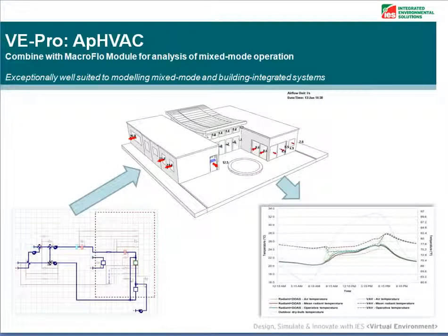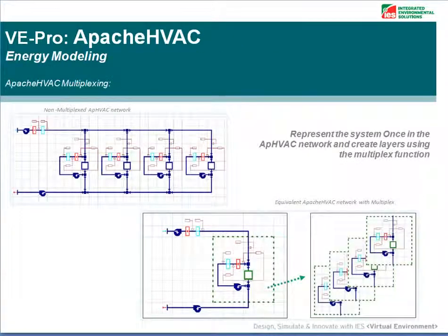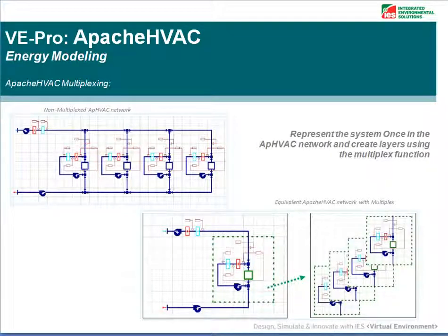The software is exceptionally well suited to modelling mixed mode and building integrated systems. One of the ways Apache HVAC has been made much more user friendly and efficient is the introduction of multiplexing, which becomes very valuable when you have large Apache HVAC networks to model — for example, a primary air handling unit serving a number of fan coil units.